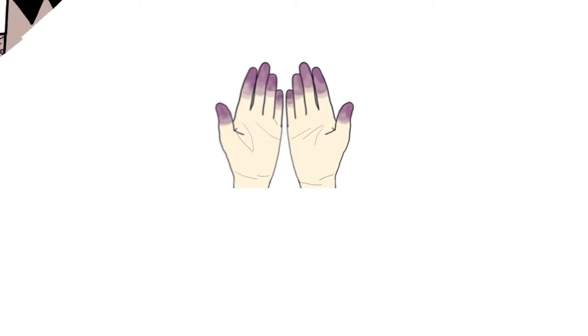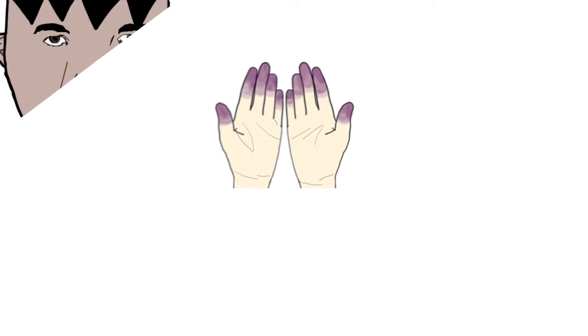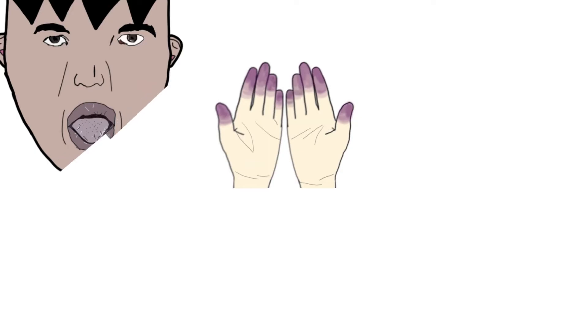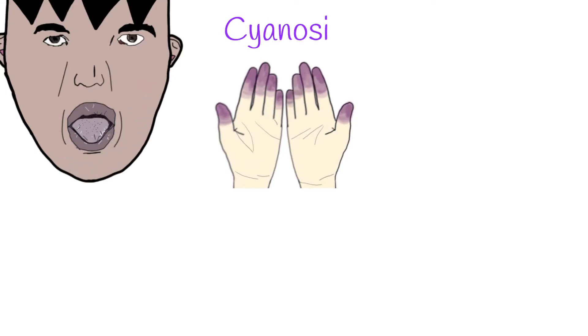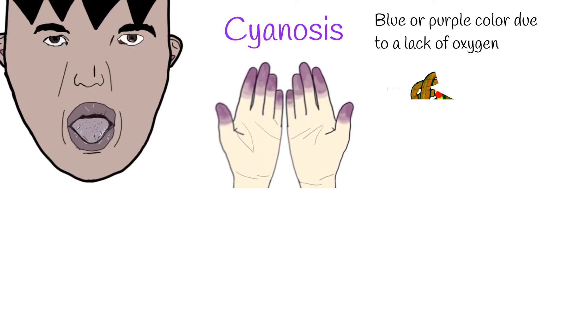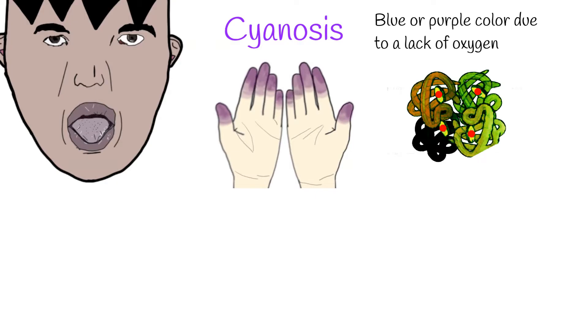Cyanosis is a condition in which the skin and mucous membranes have a blue or purple color due to a lack of oxygen in the blood. The blue color is due to the presence of reduced hemoglobin in the blood.